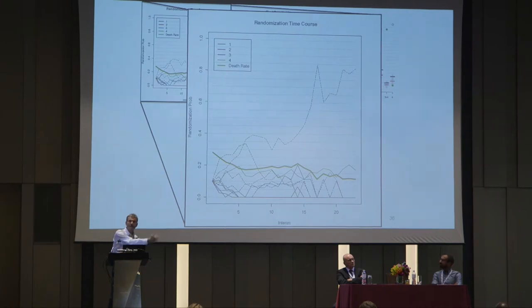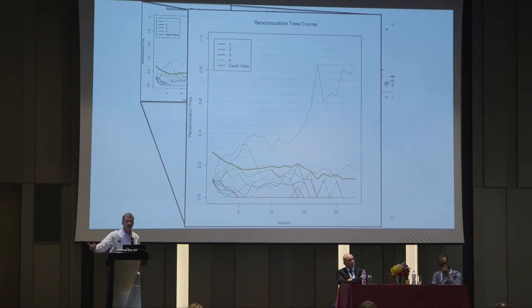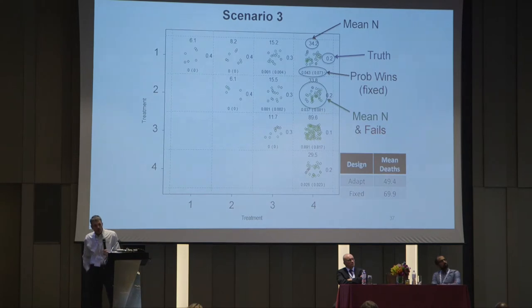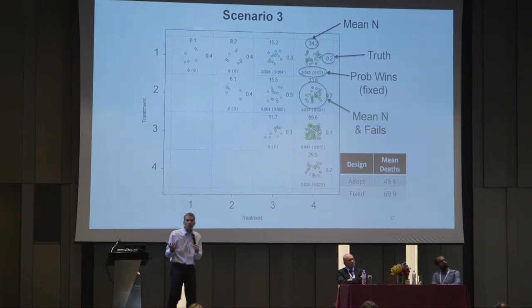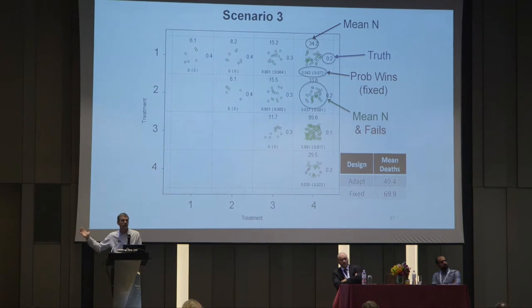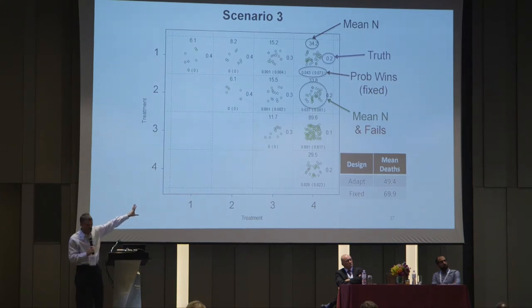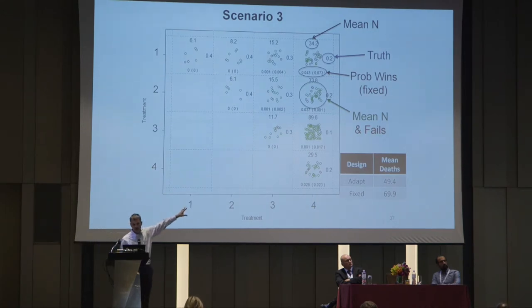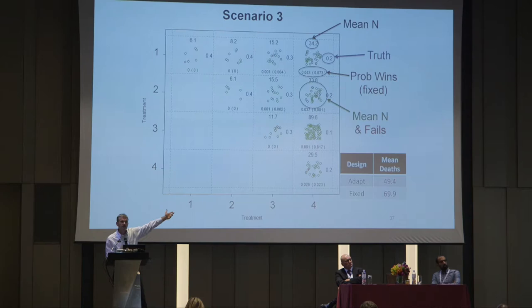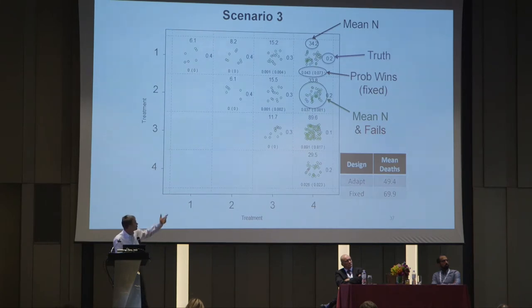We could also add an arm mid-trial — for example, if ZMAP became available, we'd put it in to see how it does with the other arms. We ran 10,000 simulated trials and looked at the average behavior of this design. You can see the operating characteristics across the ten different slots, comparing characteristics within the different arms. The number of circles represents the average number of patients placed on each arm — on average, 89.6 patients were allocated to the three plus four arm.